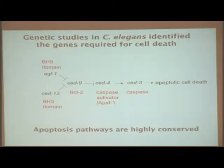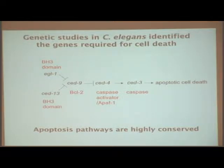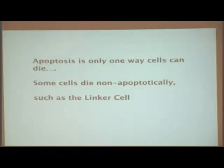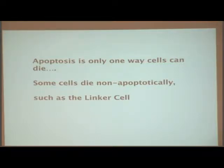Just to switch gears a little bit, this is kind of the classic cell death pathway — a beautiful example of how a model organism gives insight into cell biology that works across many organisms. There are other ways that cells can die; apoptosis is only one way. I'll define apoptosis as being caspase-dependent, meaning it requires that CED-3 gene to function.